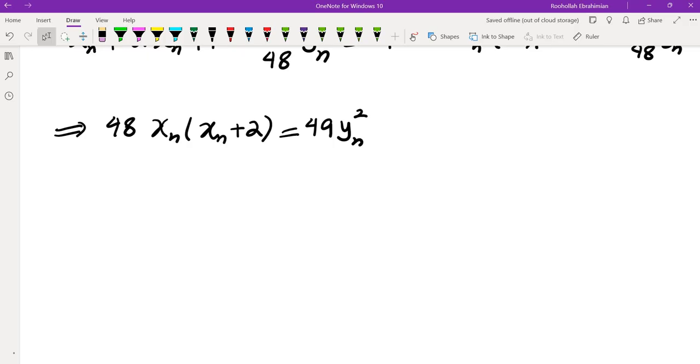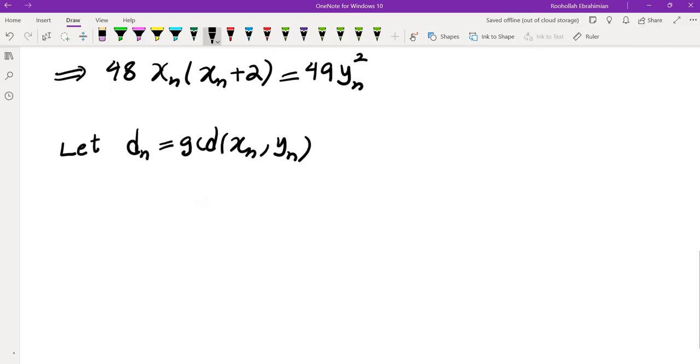We want to show that xn and yn have a large GCD, so let's call that GCD dn, the GCD of xn and yn. If you look at the left side, it's divisible by that GCD, so the right side must also be divisible by that GCD.